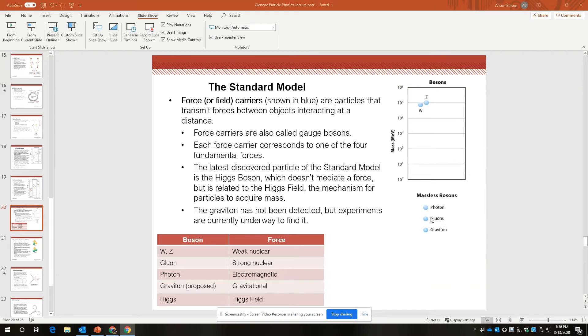The latest discovered particle of the standard model is the Higgs boson, which does not mediate a force but is related to the Higgs field. As we understand it, the Higgs field is the mechanism for particles to acquire mass, as we've discussed in class.